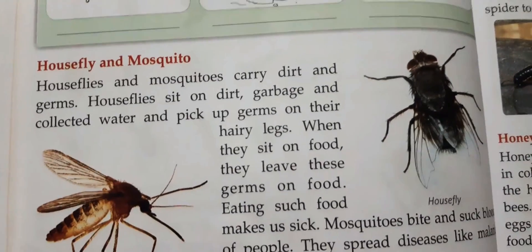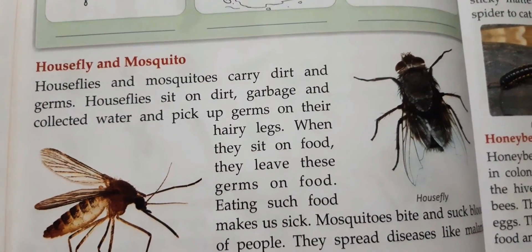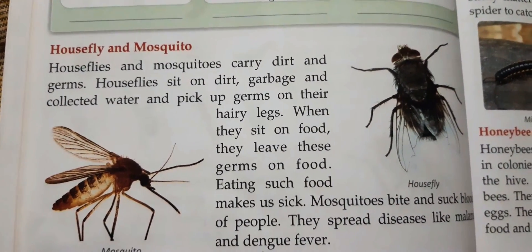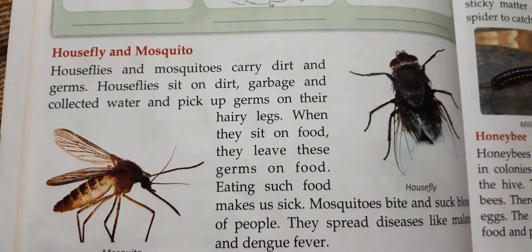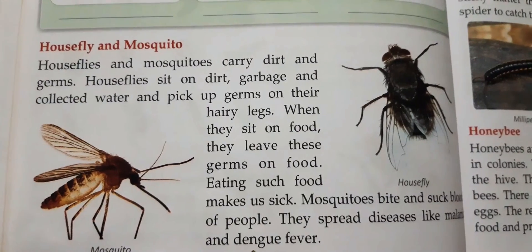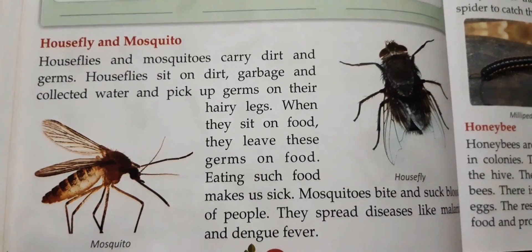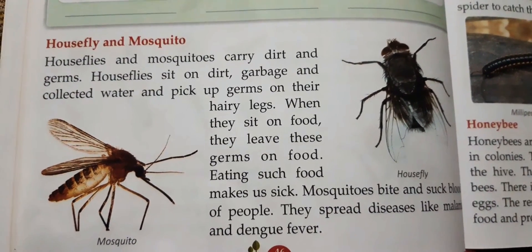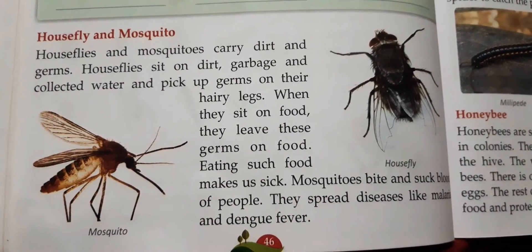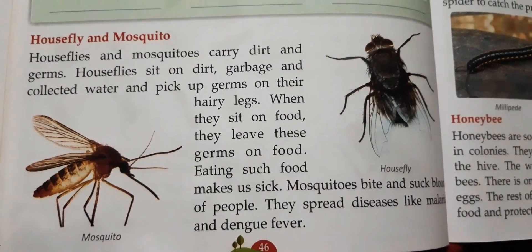Houseflies and mosquitoes carry dirt and germs. Houseflies sit on dirt, garbage and collected water and pick up germs on their hairy legs. When they sit on food, they leave these germs on food, and eating such food makes us sick. Mosquitoes bite and suck blood of people. They spread diseases like malaria and dengue fever.